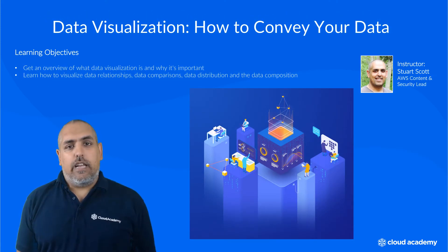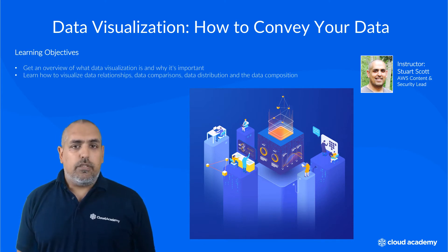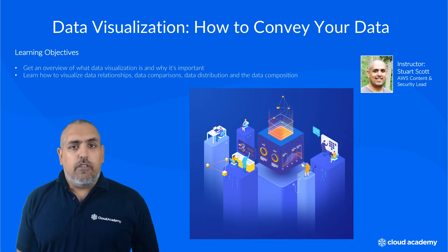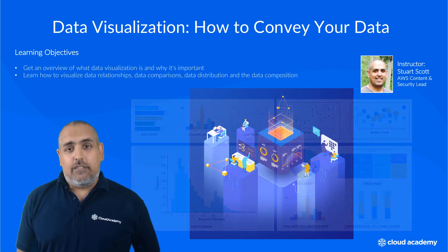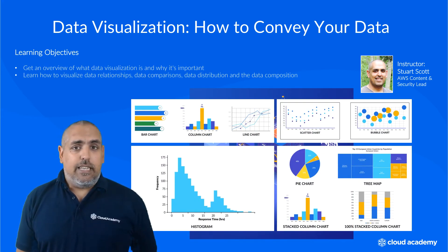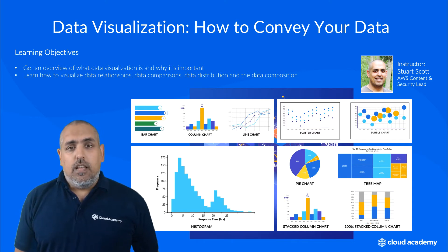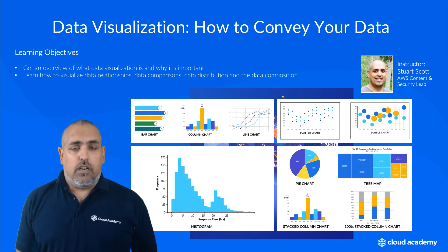Next, we have a course that focuses on how to convey your data through visualizations. This new course explores how to interpret your data, allowing you to effectively decide which chart type to use when working with data analytics. It covers data relationships using scatter charts and bubble charts, data comparisons using bar charts, column charts, and line charts, data distribution using histograms, and data composition using pie charts, stacked column charts, 100% stacked column charts, and tree maps.